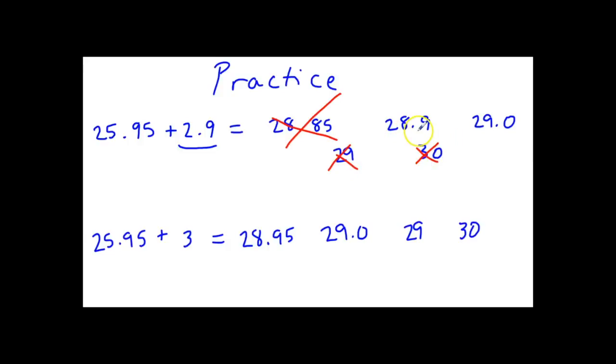Which of these two choices, 28.9 and 29.0, is the most precise measurement using the rules of significant figures for addition and subtraction? When using the rules for significant figures, you should use good rounding rules that you learned in math class. The most precise answer is 28.9.